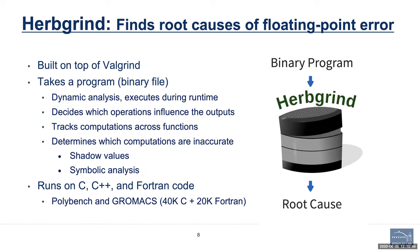The first tool I'm going to present is Herbgrind, which you can use to find the root causes of errors. It is binary instrumentation based, running on top of Valgrind. Because of that, it's generic — they show it runs on C, C++, and Fortran code, with the biggest application being around 60,000 lines of code. Underneath, it uses a trace-based approach using shadow values combined with data flow, control flow, and symbolic analysis. During tracing, every single operation is executed in all available precisions, recording all possible values.